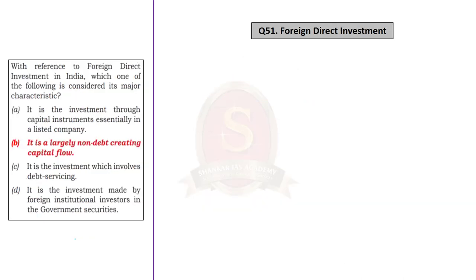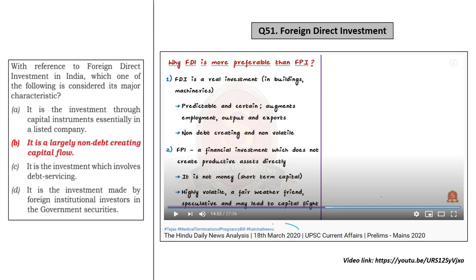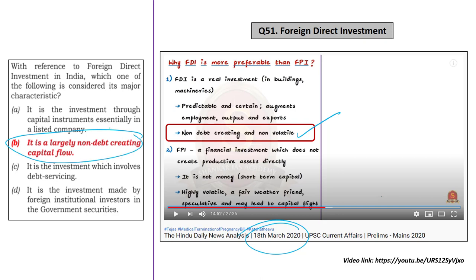The next question is related to foreign direct investments in India and asks for the major characteristic of FDI. We discussed FDI many times. On 18th March 2020 in the News Analysis, we saw that a major merit of FDI is that it is non-debt creating as well as non-volatile — that is, less fluctuating. If you know this major merit of FDI, you can easily arrive at the correct answer, which is Option B — it is a largely non-debt creating capital flow.